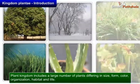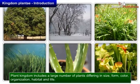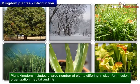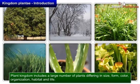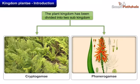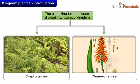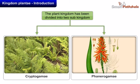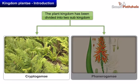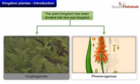So, the plant kingdom includes a large number of plants differing in size, form, colour, organisation, habitat, and life. The plant kingdom has been divided into two sub-kingdoms: Cryptogamy and Phanerogamy.